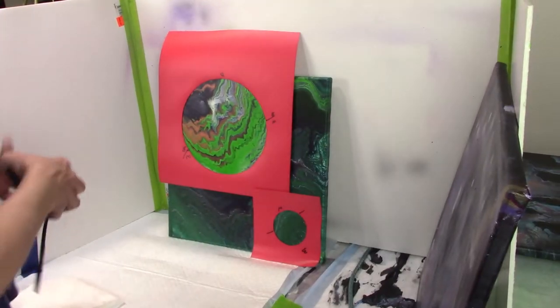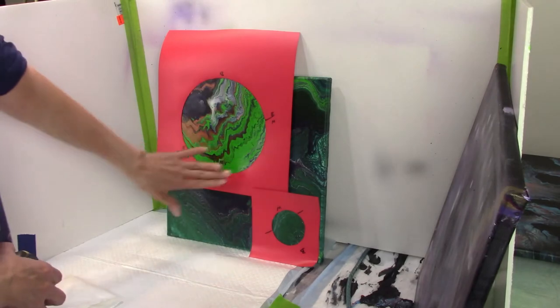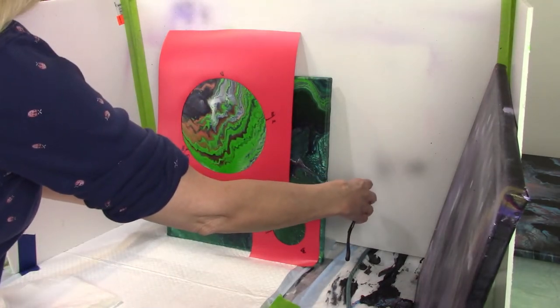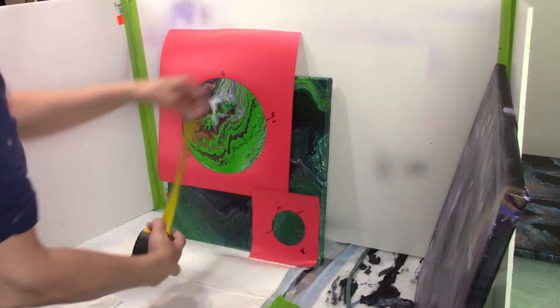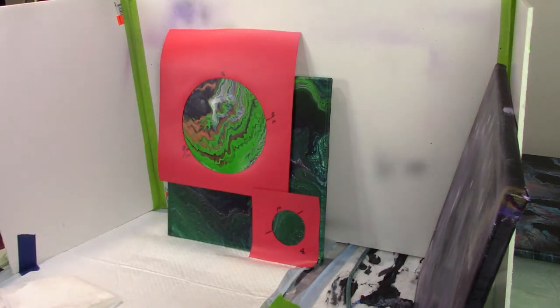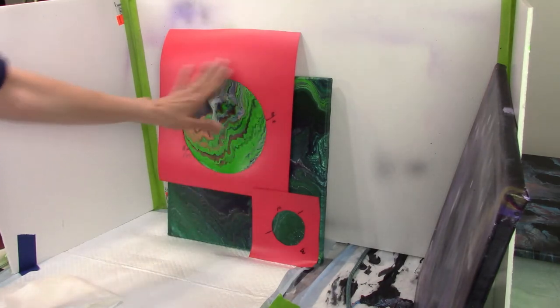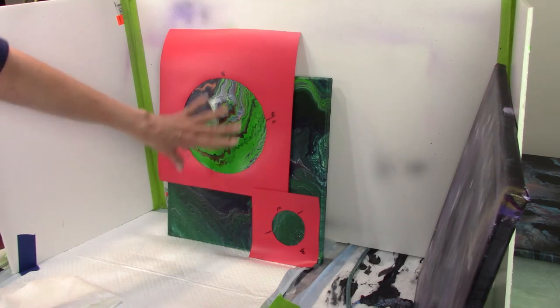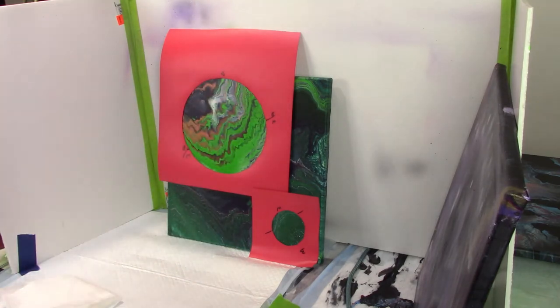Okay. So here is our painting that we did the green cup pour on. And again, this is a 14 by 14 inch square. We've already done the cup pour portion. It's dry and I've cut out my circles that are going to be for my planet. And now we're going to start some of the airbrushing on this one.